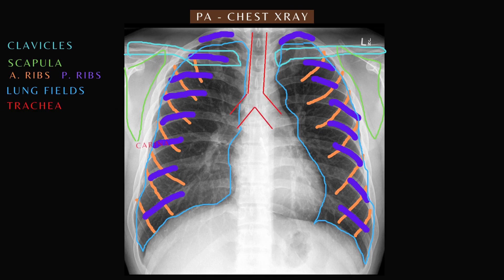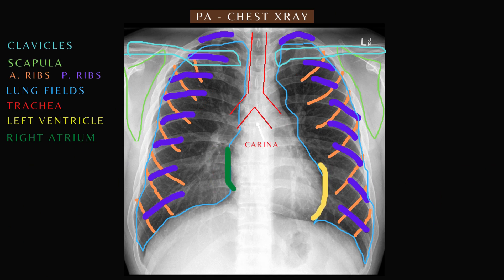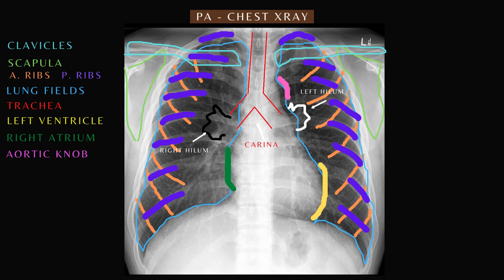Here is the trachea and carina. The left ventricle and right atrium. The right and left hilum. Above it is the aortic knob, and inferiorly is the gastric bubble.